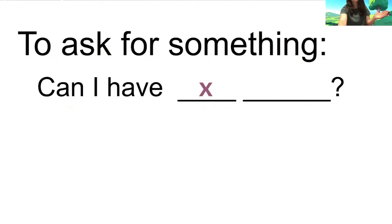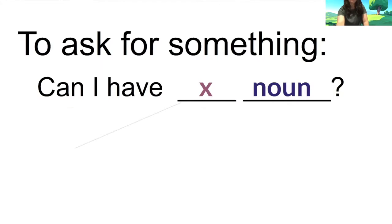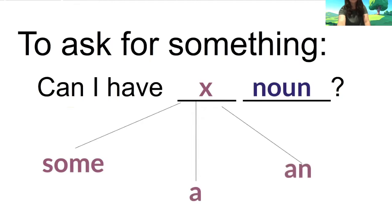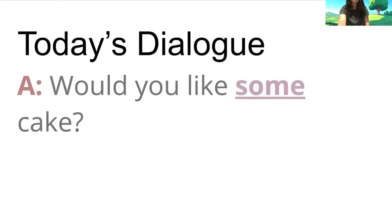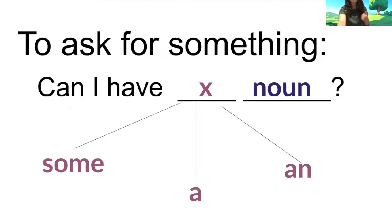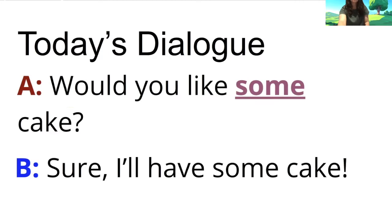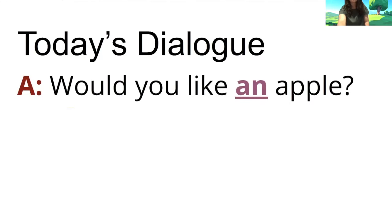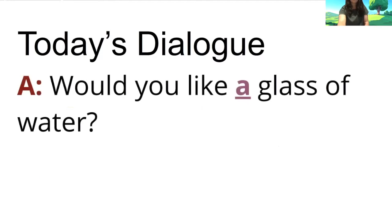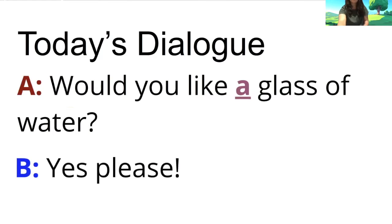When we ask for something, we use the phrase 'Can I have?' We can say 'Can I have some?' 'Can I have a?' or 'Can I have a noun?' We're going to talk about the difference between some, a, and an today. Example: 'Would you like some cake?' 'Sure, I'll have some cake.' 'Would you like an apple?' 'Okay.' And for A: 'Would you like a glass of water?' 'Yes, please.'